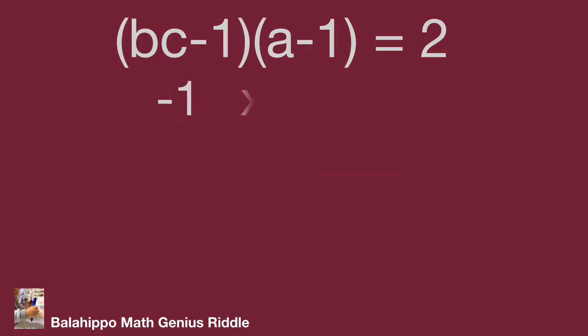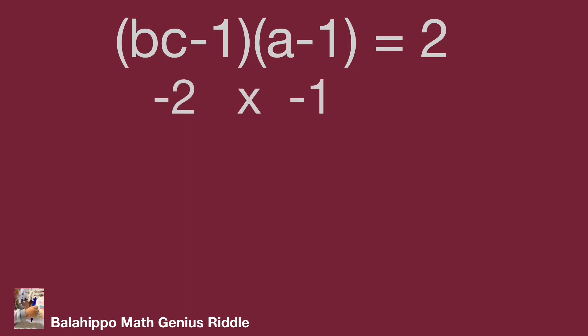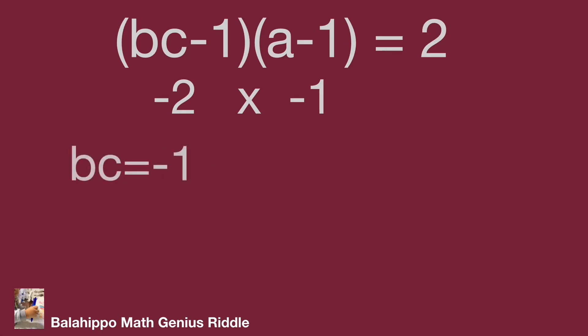In the minus 1 times minus 2 conditions: (a plus 1) equals minus 2, so a equals minus 3. Since a should be positive, this is not the right answer. In the minus 2 times minus 1 conditions: (bc plus 1) equals minus 2, so bc equals minus 3. Since bc should be positive, again it is not the right answer.